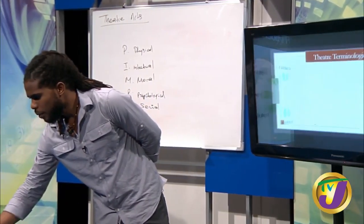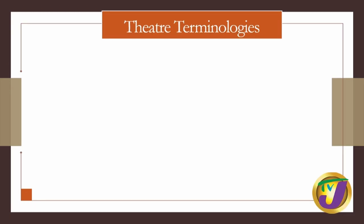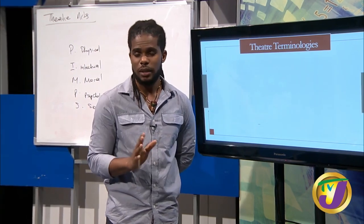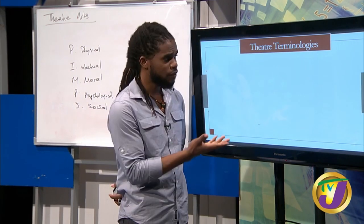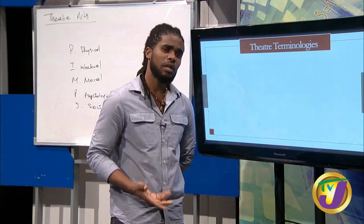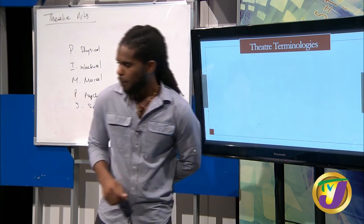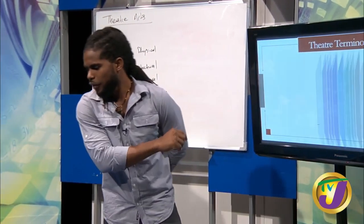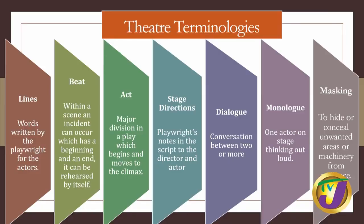We can now move on to some theatre terminologies. On your CSEC exam, you're going to get questions about theatre terminologies, so you definitely have to know your theatre jargons. First, we have lines — the written words by the playwright for the actors. Everything in the script for the actors to say through the characters is considered lines. Then we have the beat — within a scene, an incident that occurs with a clear beginning and end that can be rehearsed by itself.